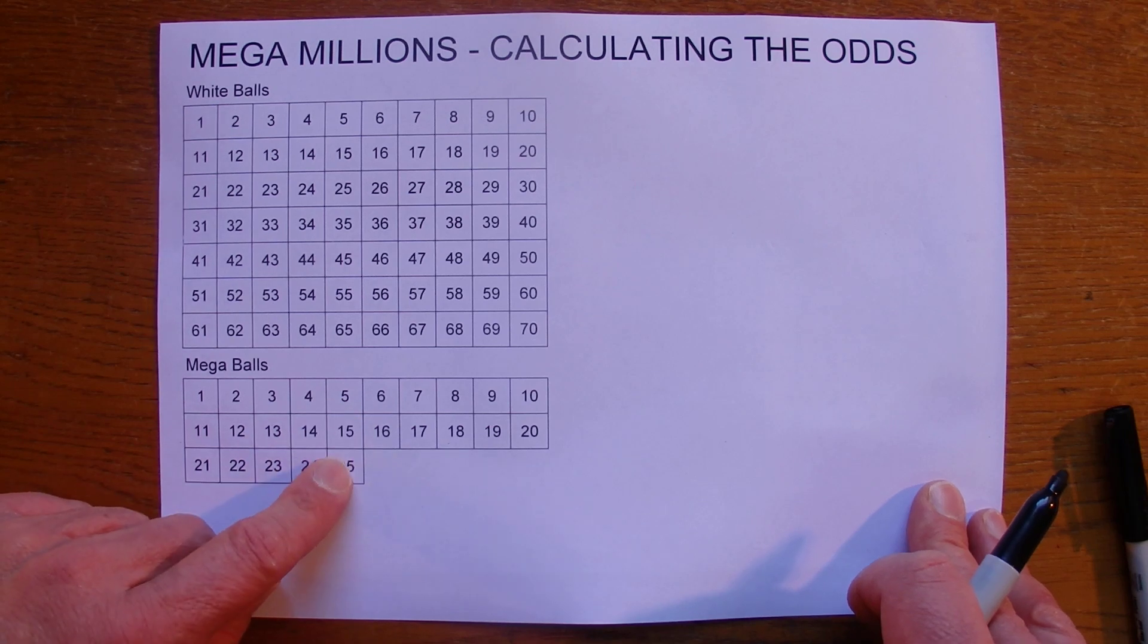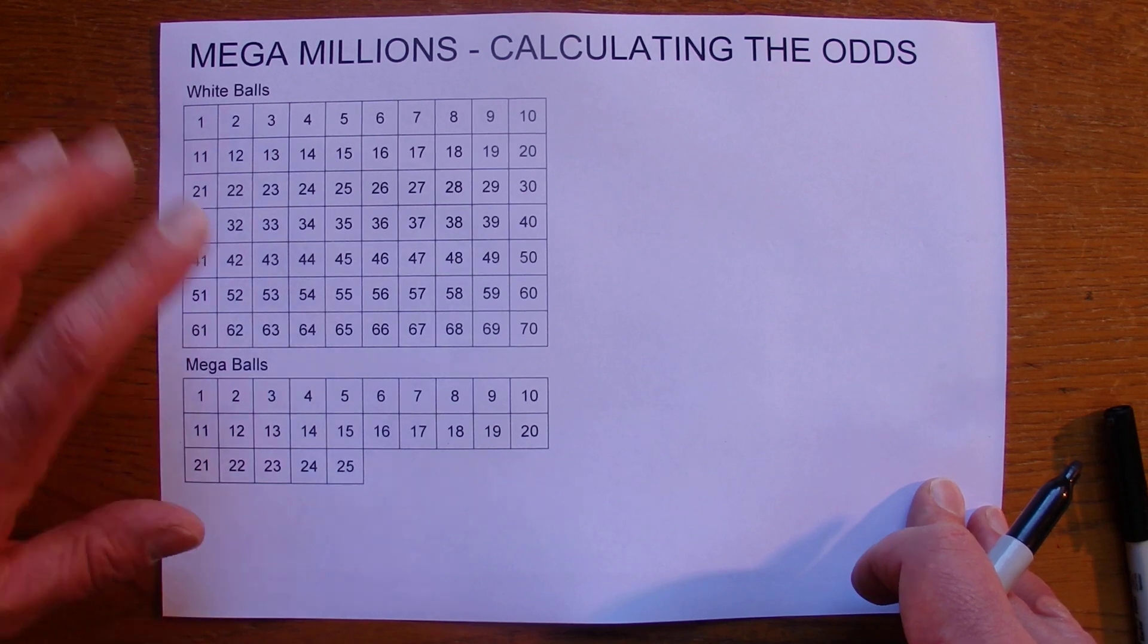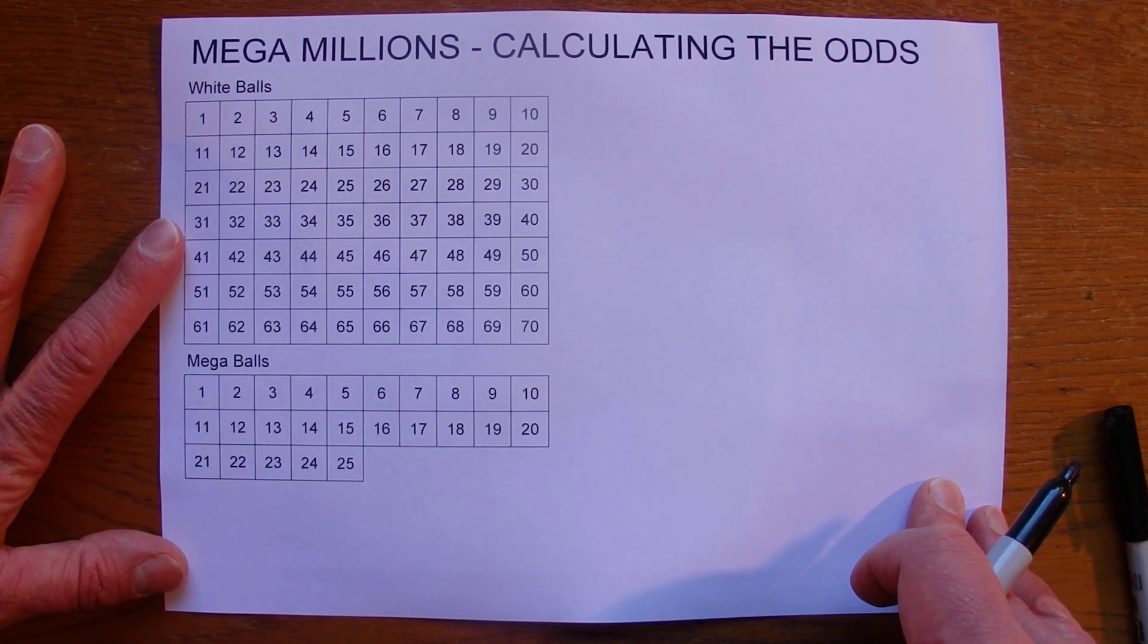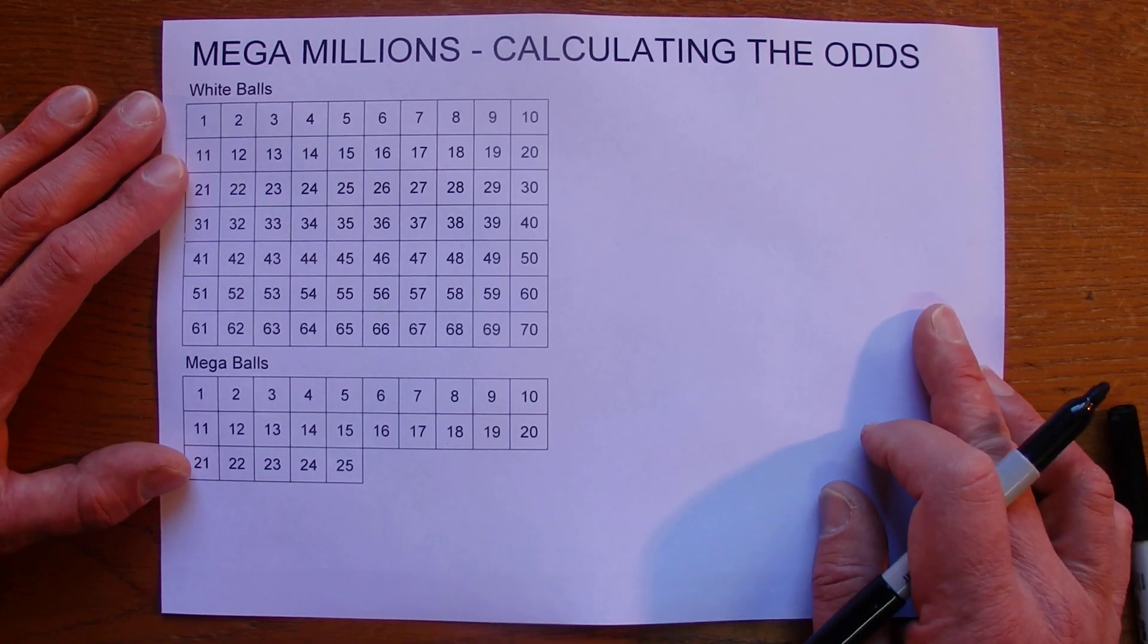And in the Mega Balls section down the bottom there's now 25 numbers and you must select one of those numbers, or match one of those numbers, to win the first prize.